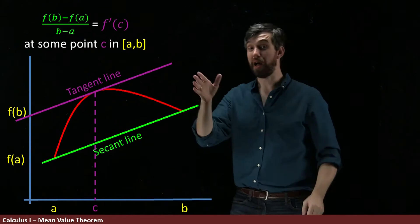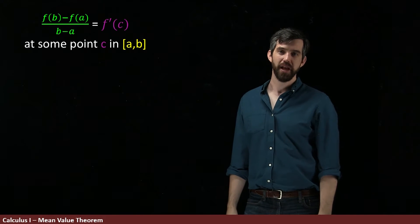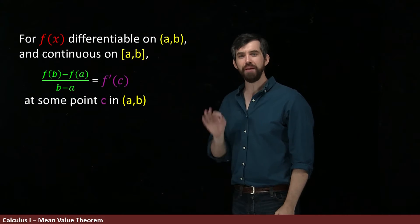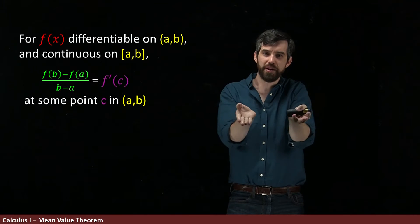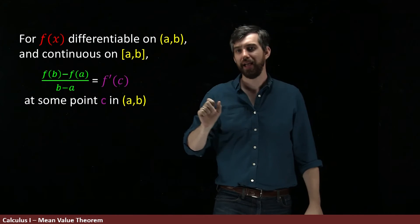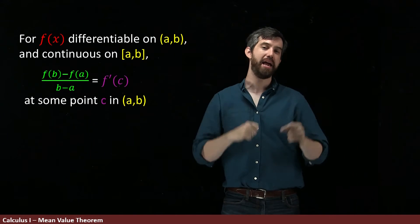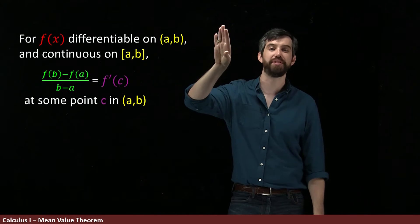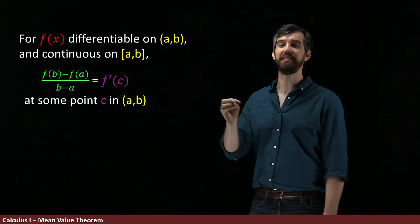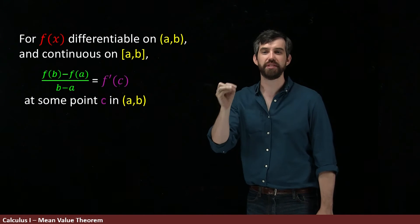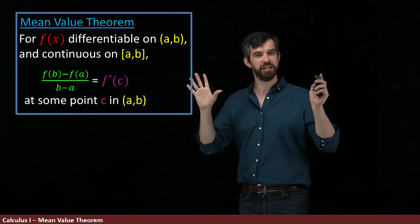Now, is this true for all functions? No — it's true for nice functions, so let's be precise. The conditions of the theorem are that f(x) is differentiable on the open interval (a, b) and continuous on the closed interval [a, b]. When those conditions hold, we get the existence of a c where the slope of the secant line and the slope of the tangent line at c are the same. Collectively, this is the Mean Value Theorem.